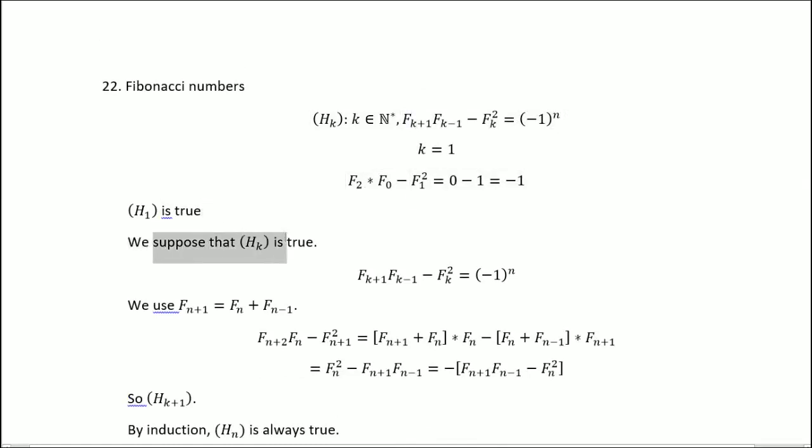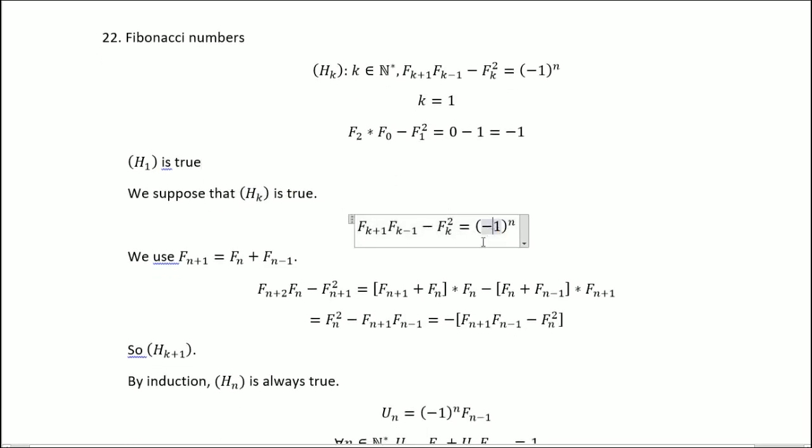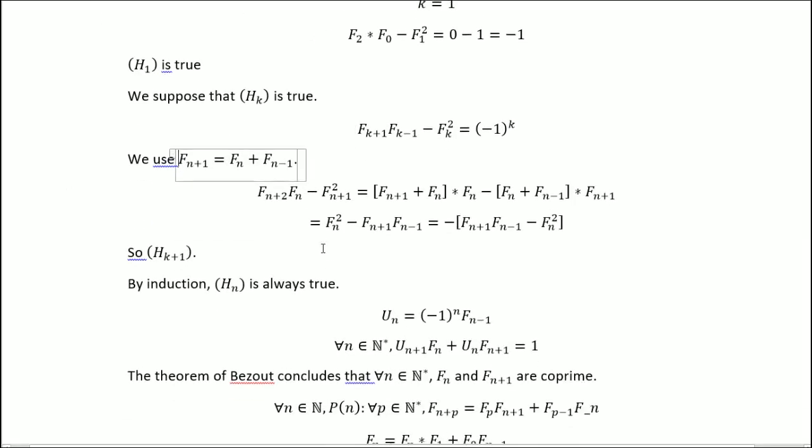Suppose that H_k for some k is true. So we get this relation. We use this formula here. And so that proves that we split using the formula, and then we factorize and use the hypothesis. And by induction, we get that it's true.